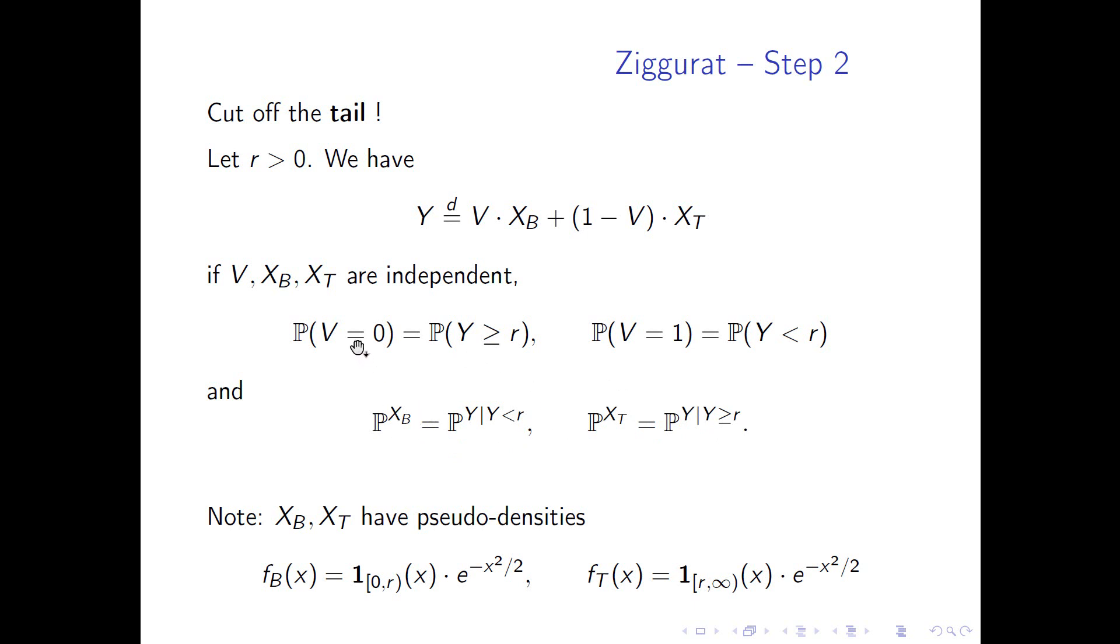And with V, we decide whether we sample from the tail. So if V is equal to zero, we sample from the tail. And if V is equal to one, we sample from the base. And for everything to work, V needs to have the right probabilities. So the probability that V is equal to zero, which is we are sampling from the tail, is the probability that Y takes values greater or equal than r. And vice versa, so the probability of V equal to one is the probability of Y taking values less than r.